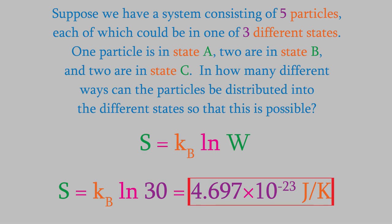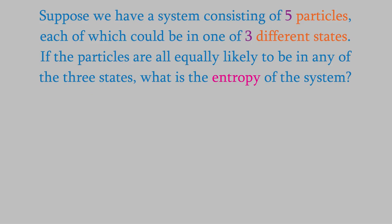Now let's try that again, but this time, suppose that the five particles can be in any of the three possible states with equal probability. In that case, we can use the other equation we have for entropy. Each of the three microstates is equally probable, so the degeneracy of our system is 3.